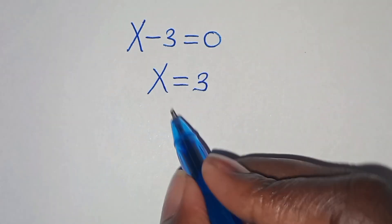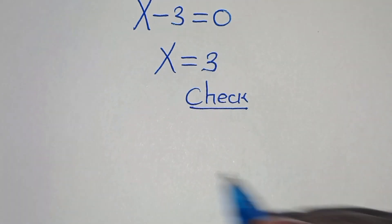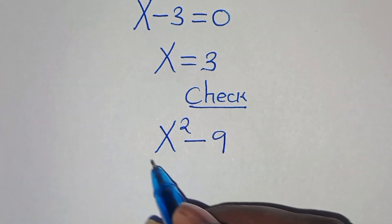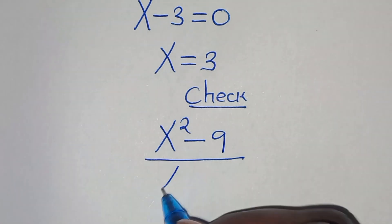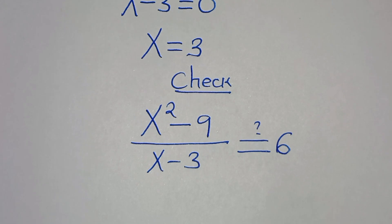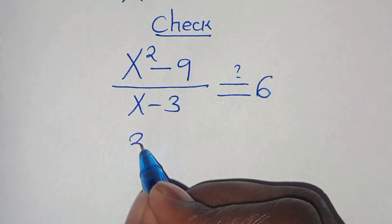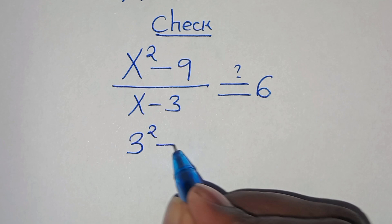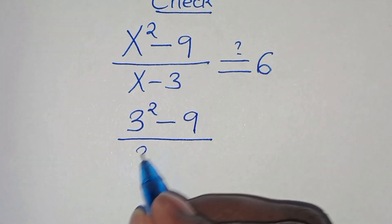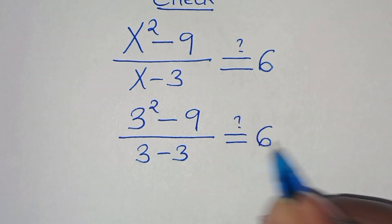Now let's check if this value of x satisfies the equation. Recall we have x squared minus 9 divided by x minus 3, which should give us 6. Substituting x equals 3: 3 squared minus 9 divided by 3 minus 3, this is supposed to give us 6.